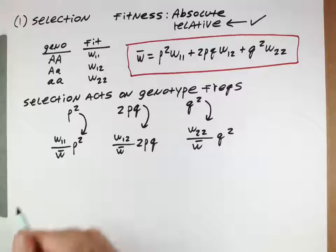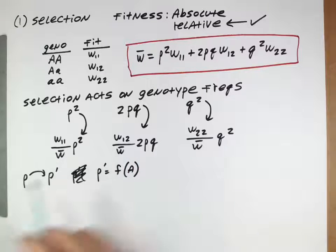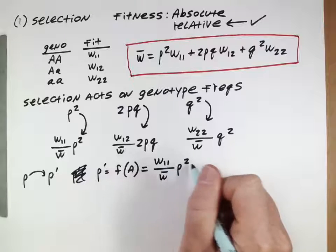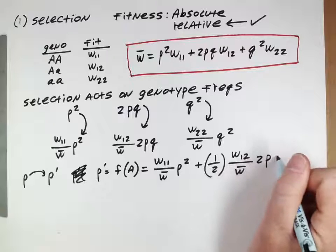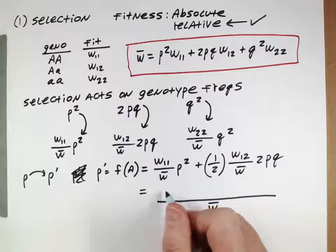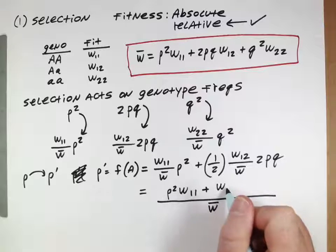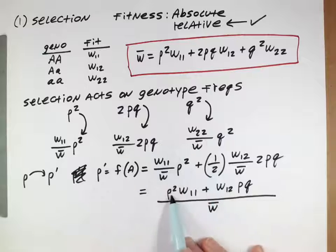Now we want to model the evolutionary process — specifically, how P changes from one generation to the next due to these changes in genotype frequencies. The new frequency of P, the capital A allele after selection, equals the frequency of AA homozygotes plus one-half the frequency of heterozygotes, since only half of the heterozygote's genes are the capital A allele. Simplifying, we get P-squared W11 plus PQ W12, all divided by W-bar.